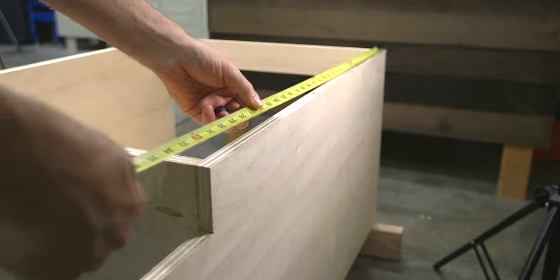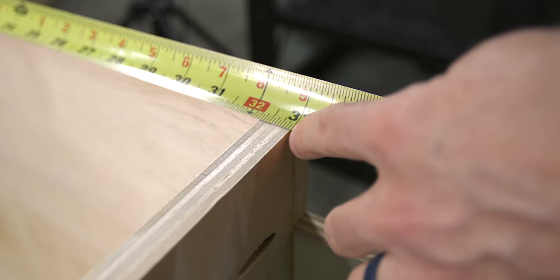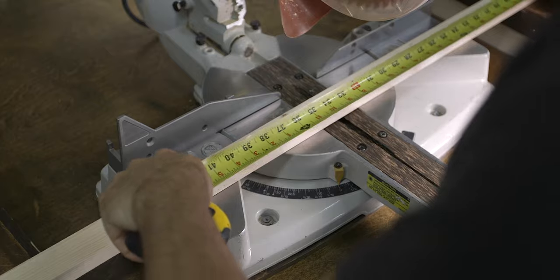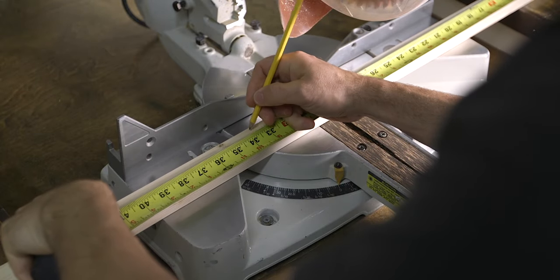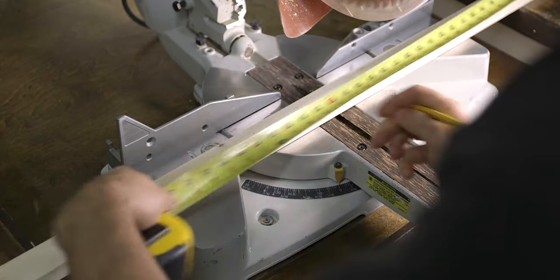To find the length of the styles, measure from the top of the cabinet down to the bottom shelf, then add five eighths of an inch for the overhang. Transfer that measurement to your face frame material and cut two pieces using a hand saw or a power miter box.